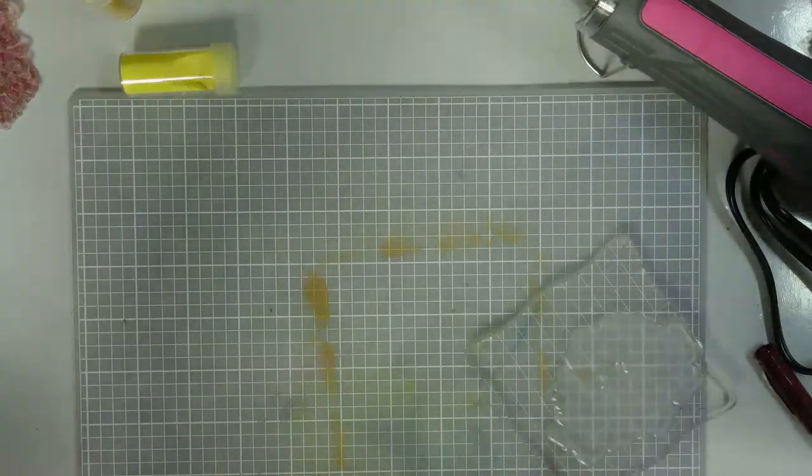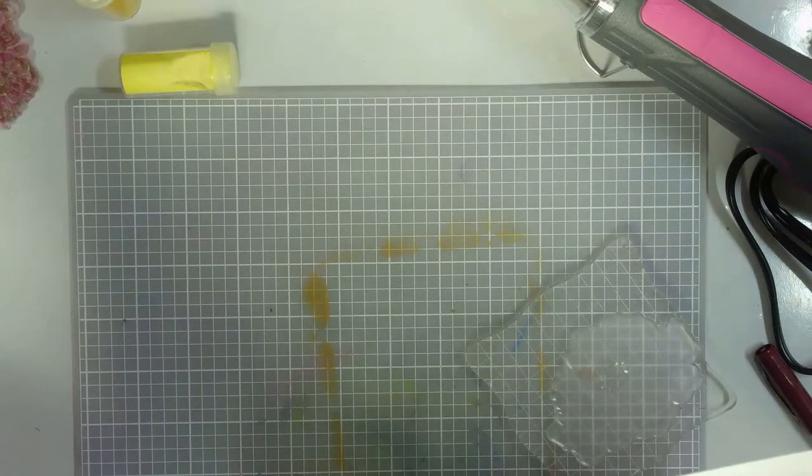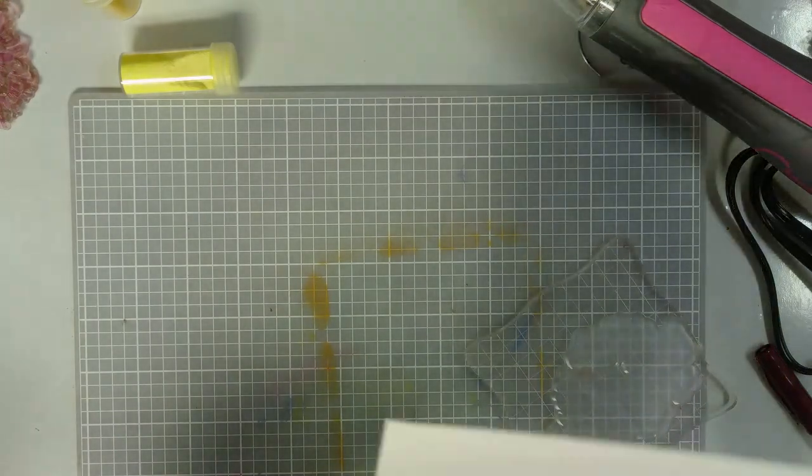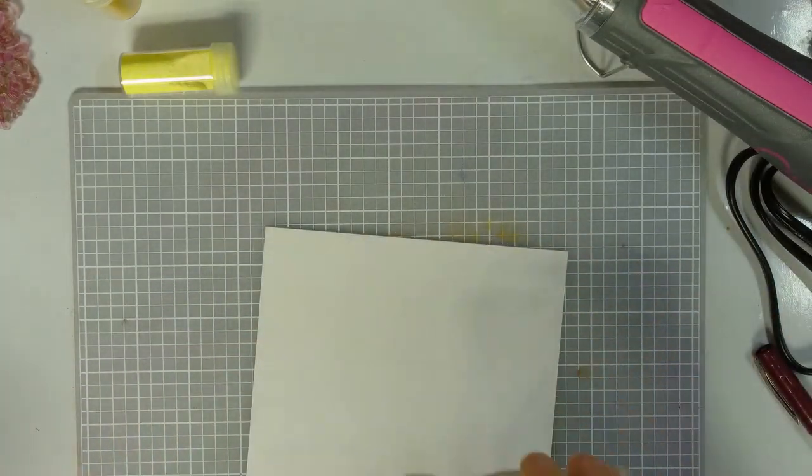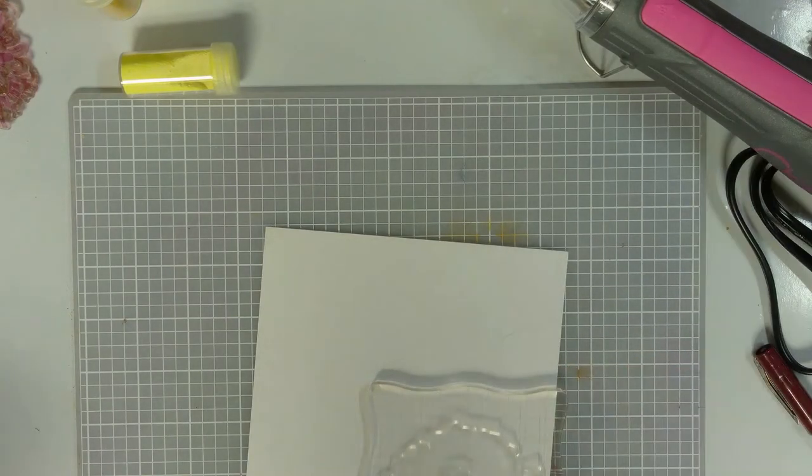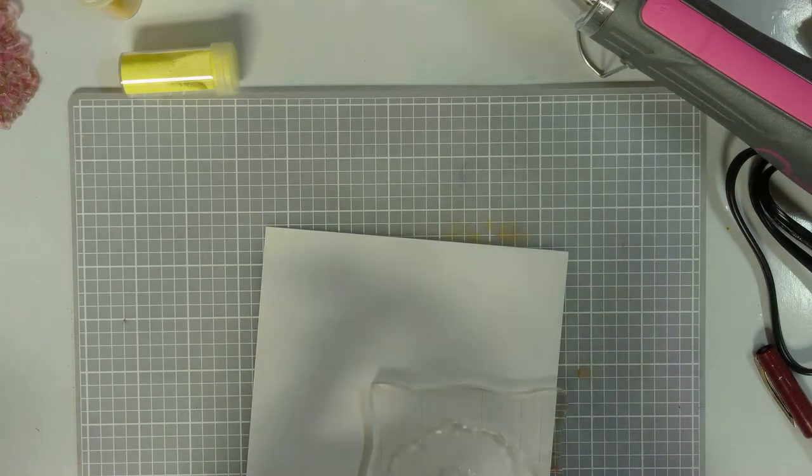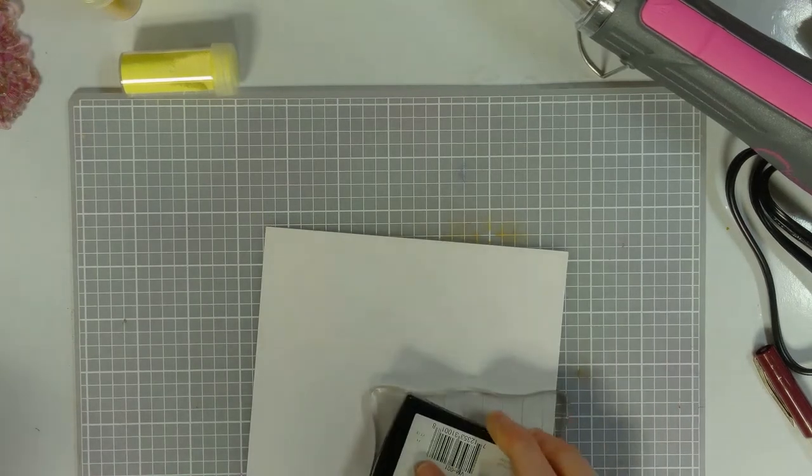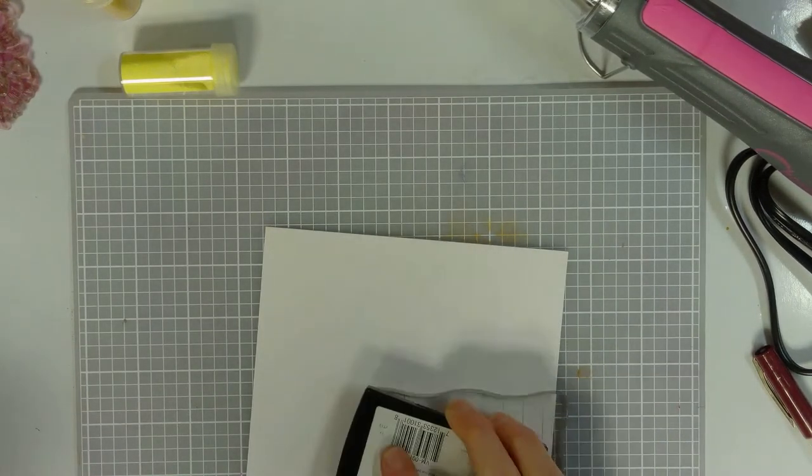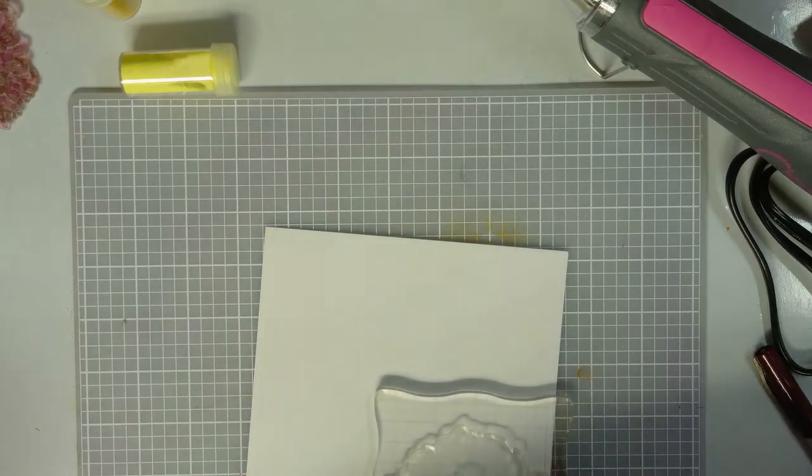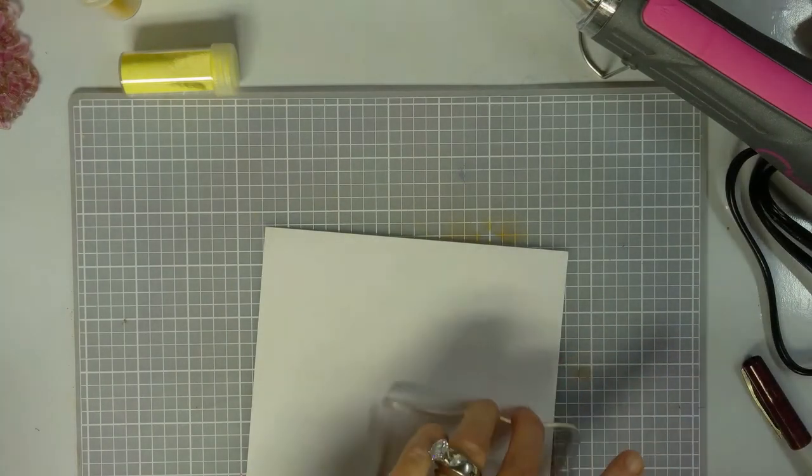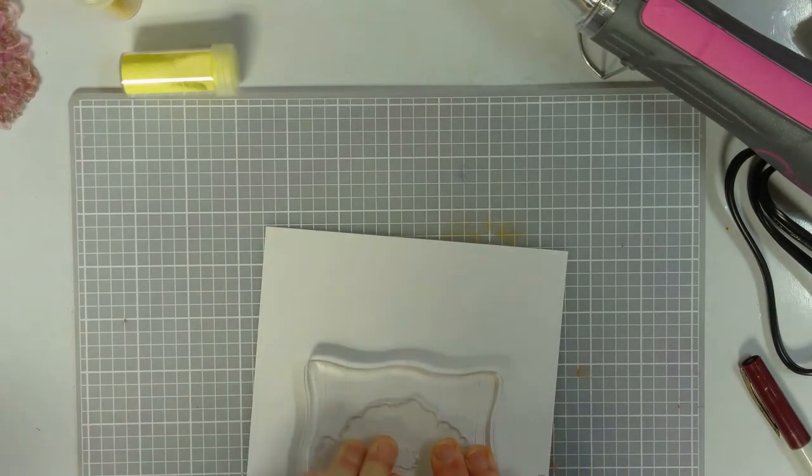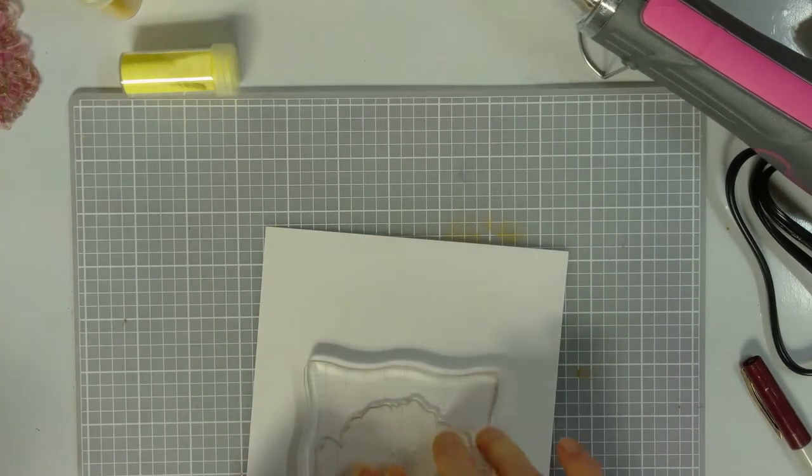We are going to get a piece of white cardstock. You can use whatever color you want. I am getting my Versamark ink pad, and I'm going to go from some light to dark on my embossing powder.